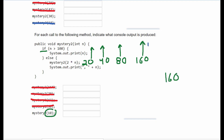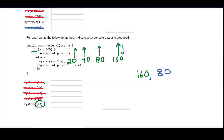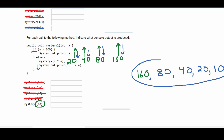Now we need to go backwards and finish the else statement for each recursive call. We have 160, then comma and the current n which was 80, then back through and comma 40, then comma 20, and then back here and comma 10. So the full answer for this part is 160, 80, 40, 20, 10.